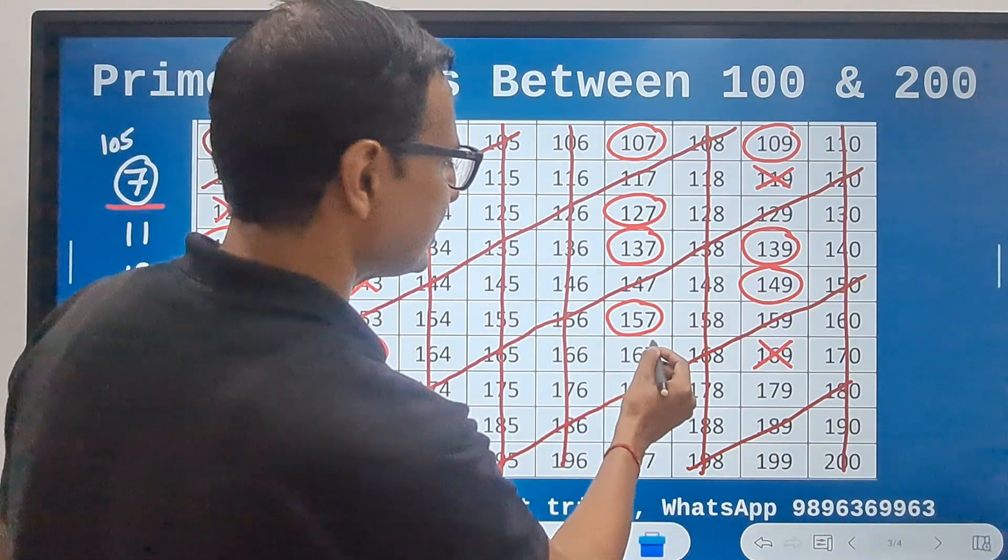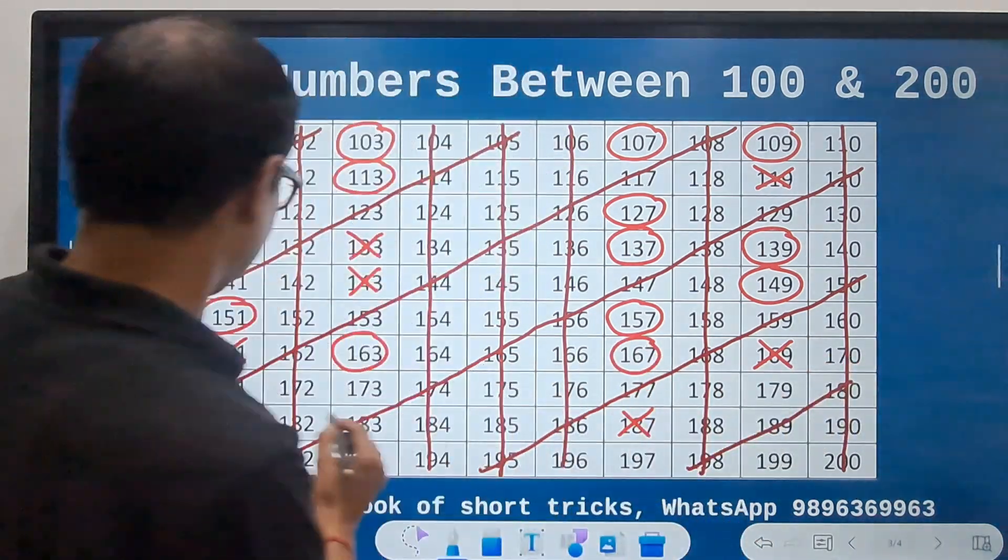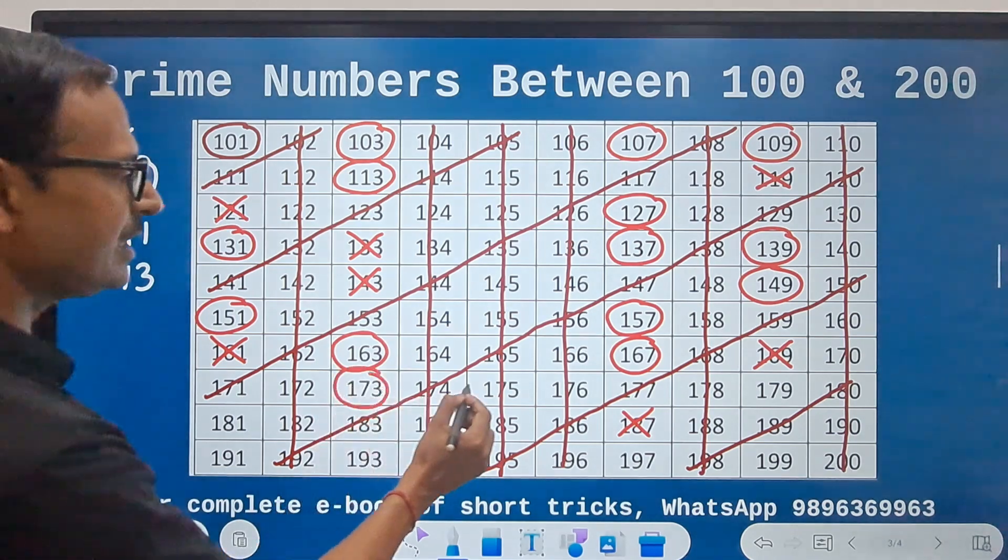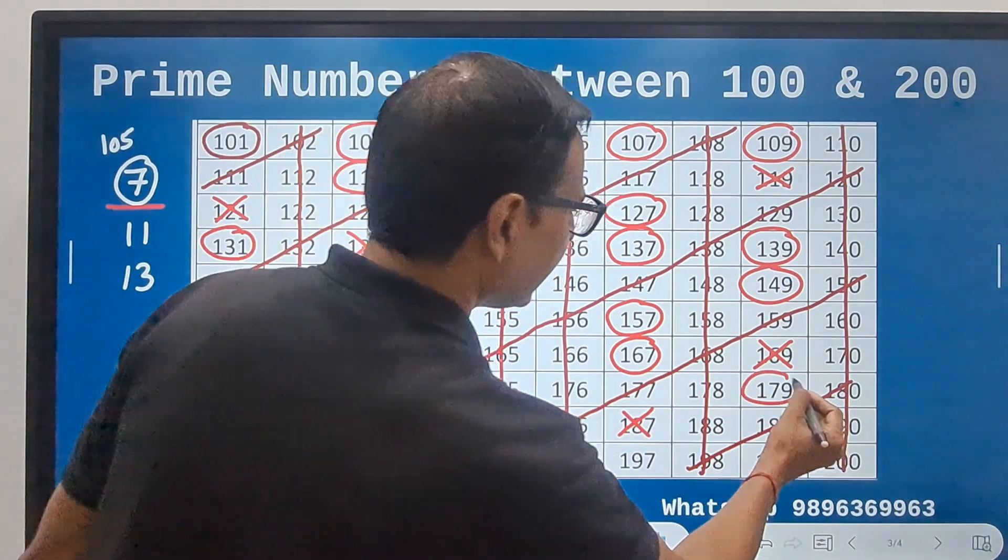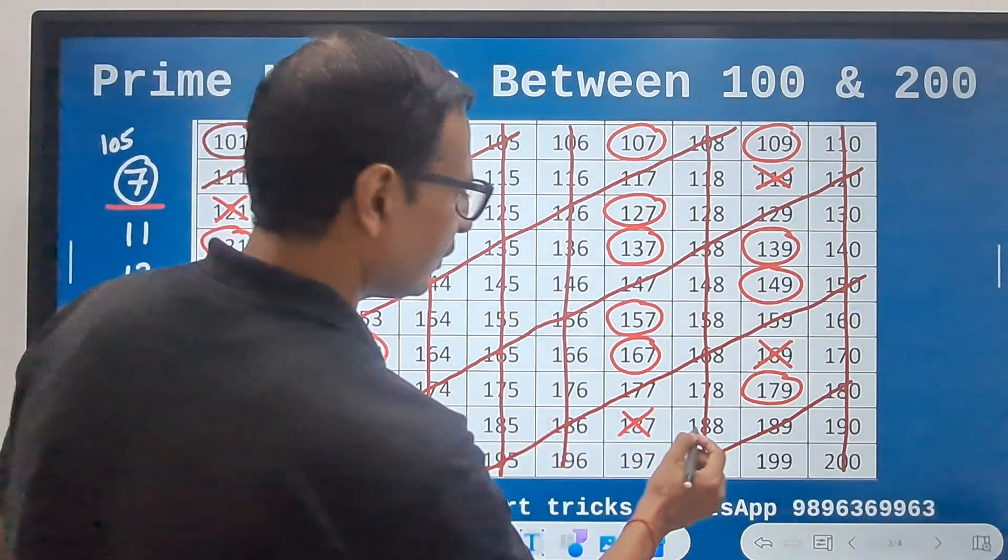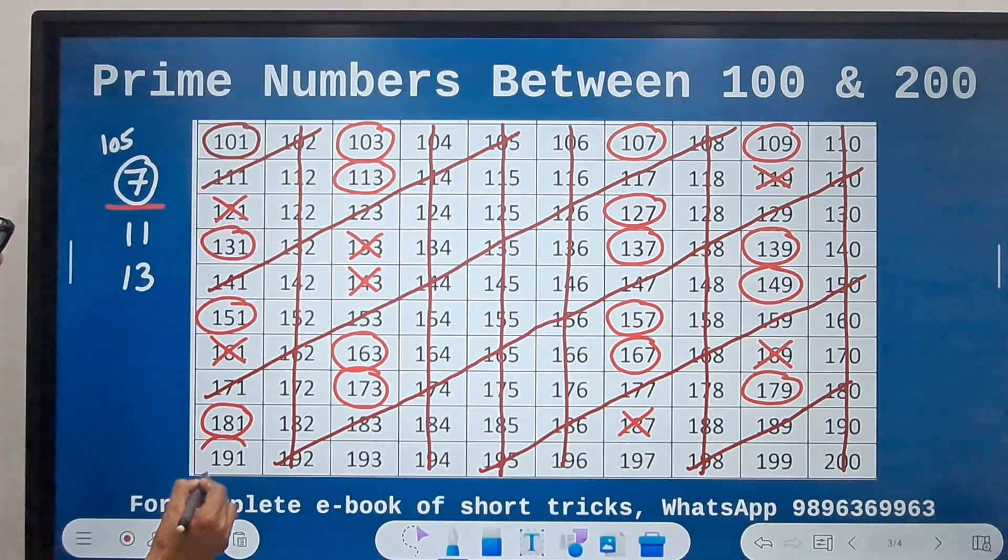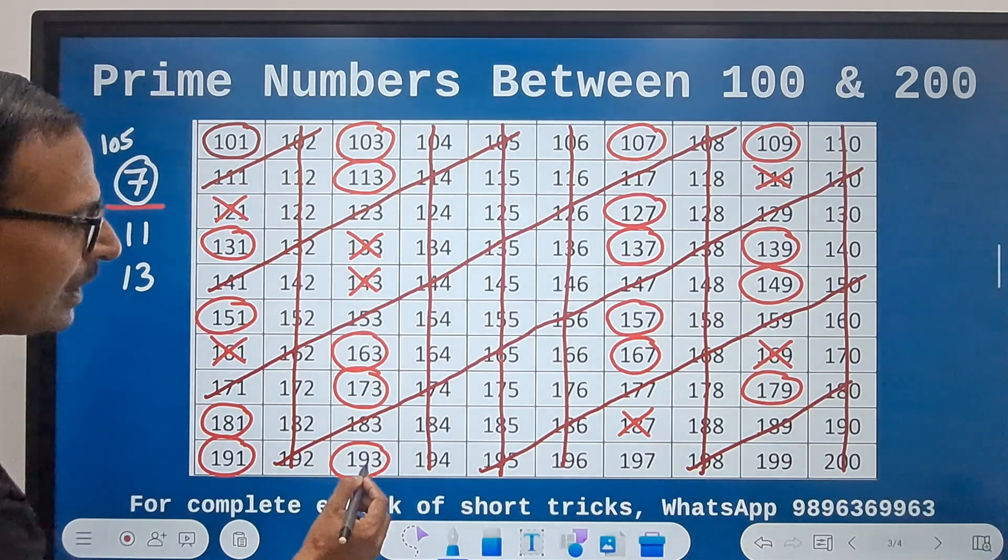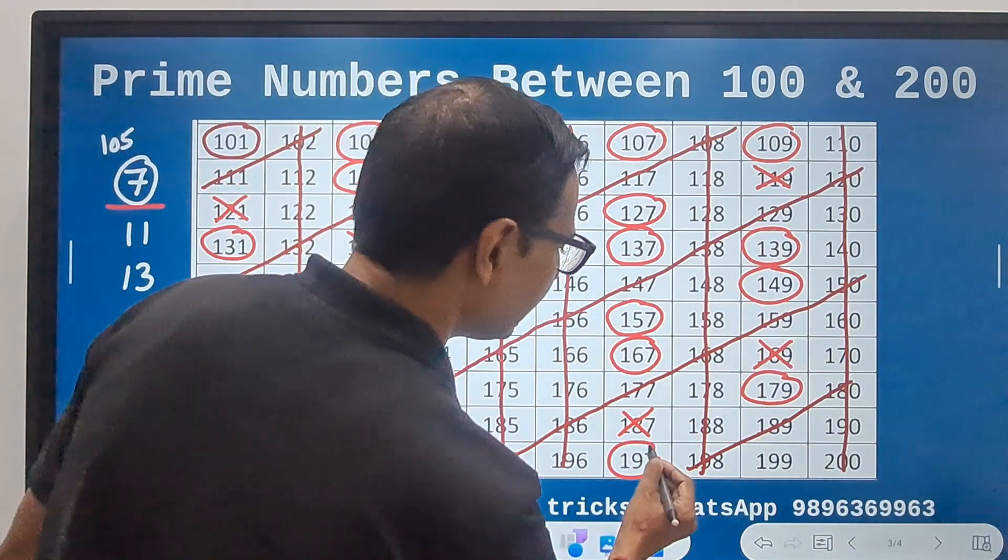Then we have 173, 179, 181, and after that we have 191, 193, and 197. Finally, 199.